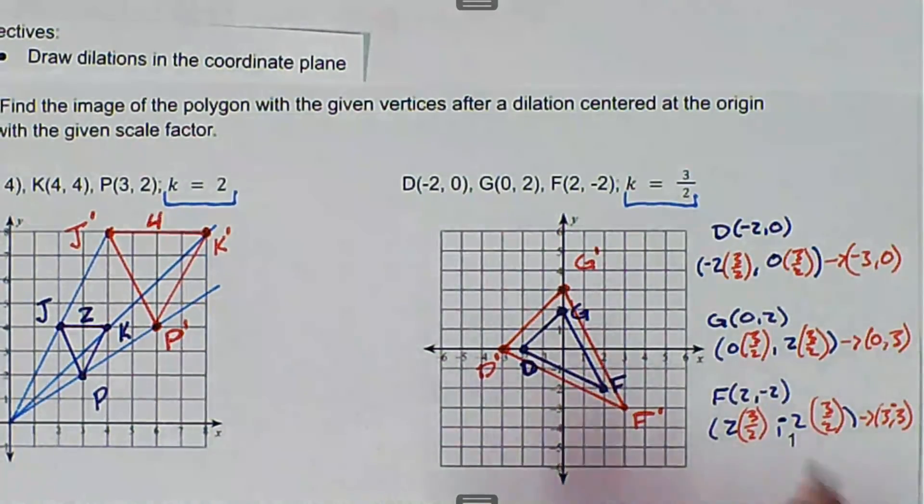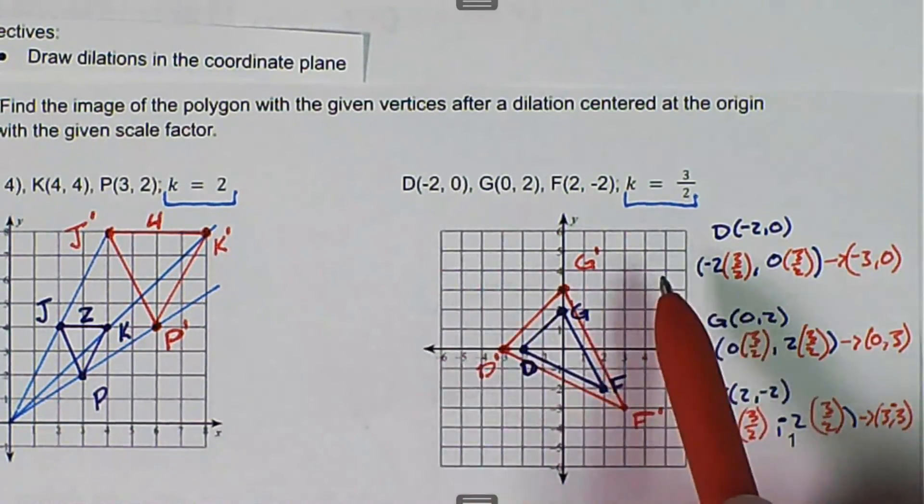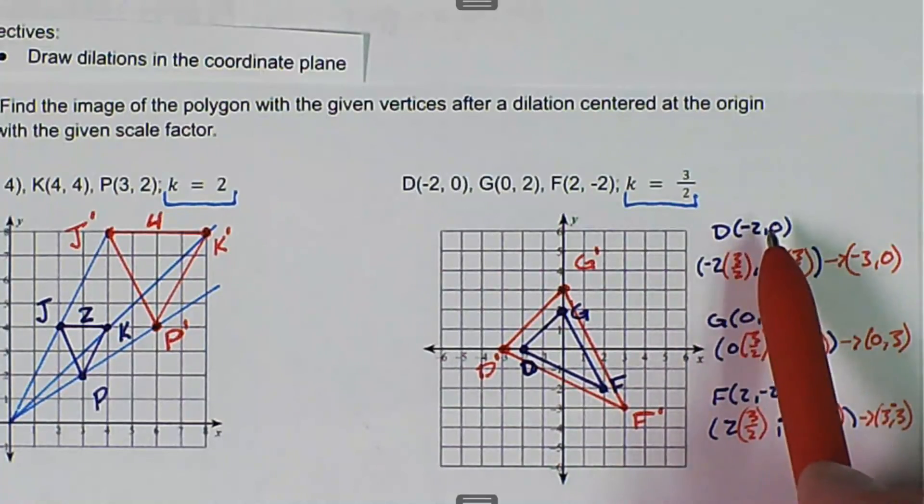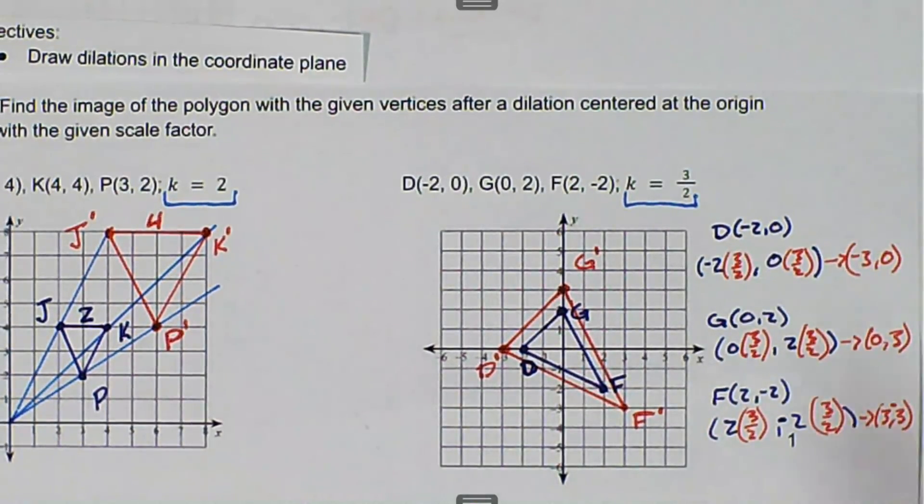And so that's the two different ways you can do it. You can draw the lines through the given vertices and then count similar to like a slope. Or you can multiply the given coordinates by the scale factor, get your new coordinates and then plot those.